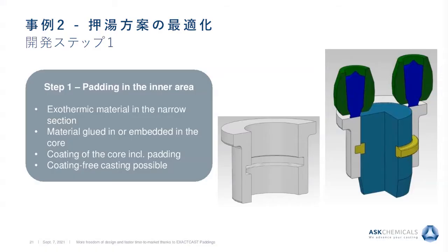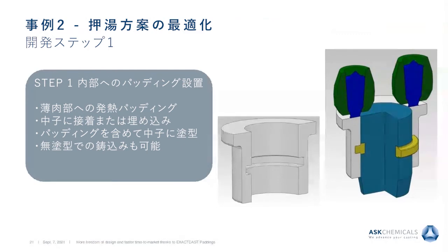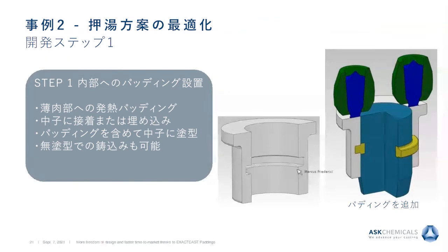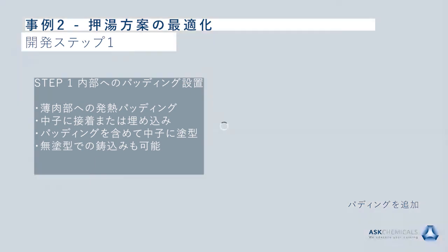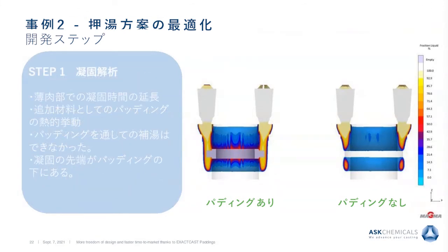We can already anticipate trouble with the narrowing section. As a first approach, we add material where a foundry engineer would think to add it — at the narrowed section — mimicking what would happen if cast as a complete piece. We add the padding or exothermic material there, with a small core print to embed it into the core. This can be done by gluing, shooting, or coating depending on your process.